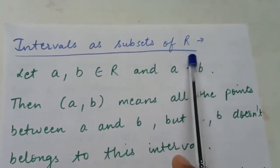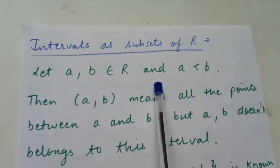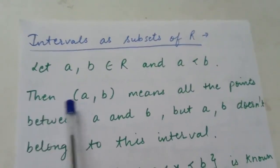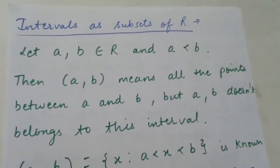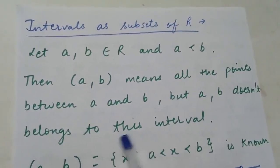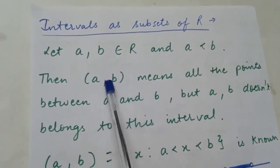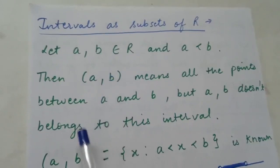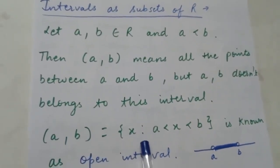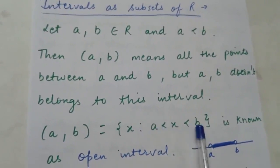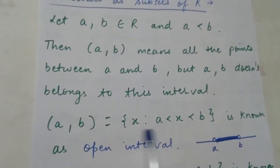Now we study intervals as subsets of R. Let a, b belong to R with a < b. Then (a, b) with round brackets — also called open brackets — means all the points between a and b, but a and b themselves do not belong to this interval. In set-builder form: {x : a < x < b}. This is known as an open interval.